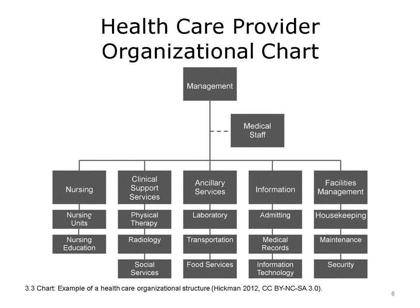Many departments have functions that cross divisions. Large providers, such as integrated delivery systems, large specialty hospitals, and academic medical centers, typically require complex organizational charts. Smaller organizations, such as small community hospitals, may use an organizational chart similar to our example. Some providers, such as independently owned ambulatory facilities, outpatient clinics, physician office practice groups, and home health agencies, usually have simpler charts than the one displayed here.